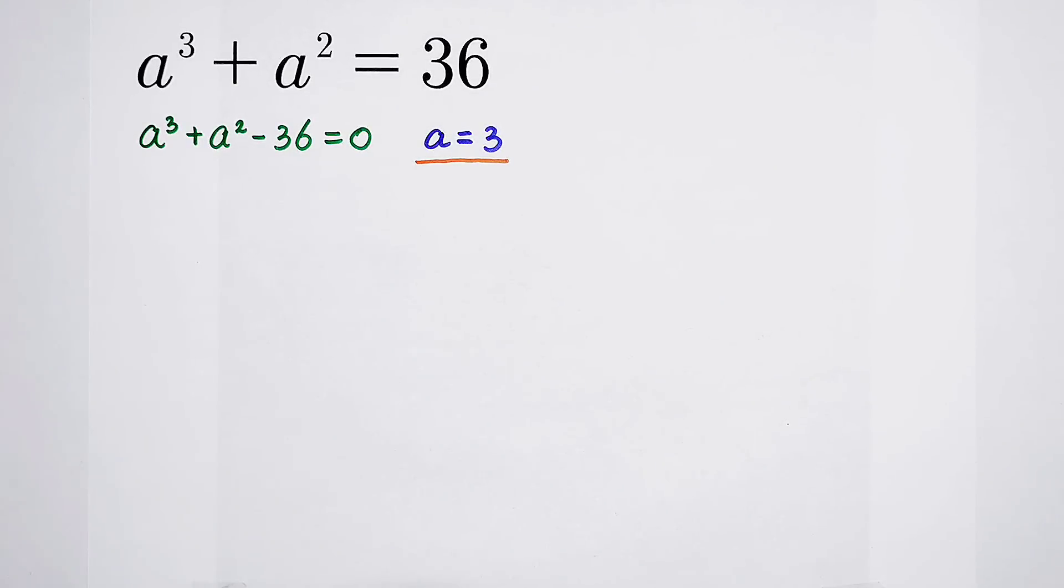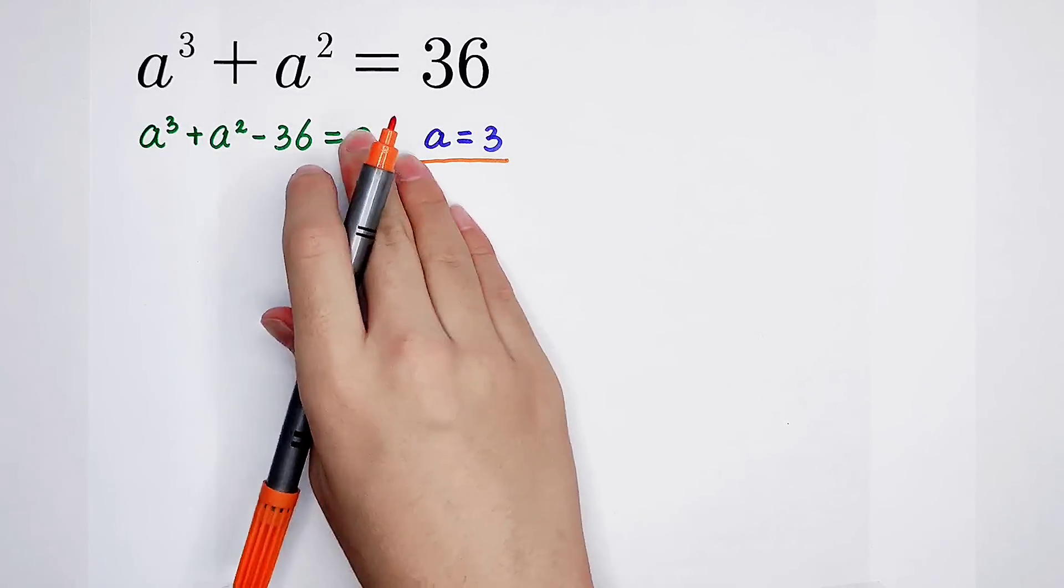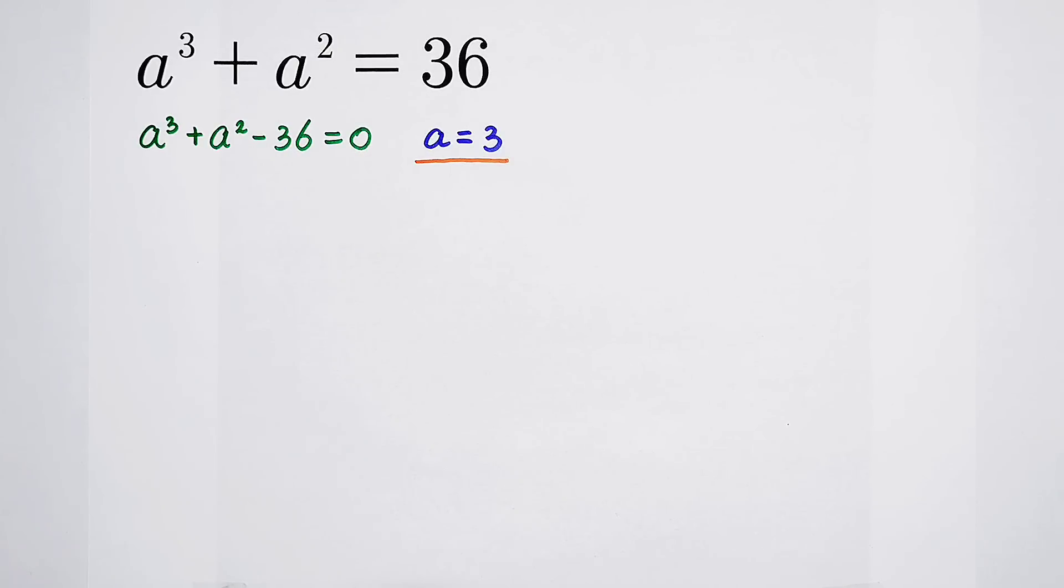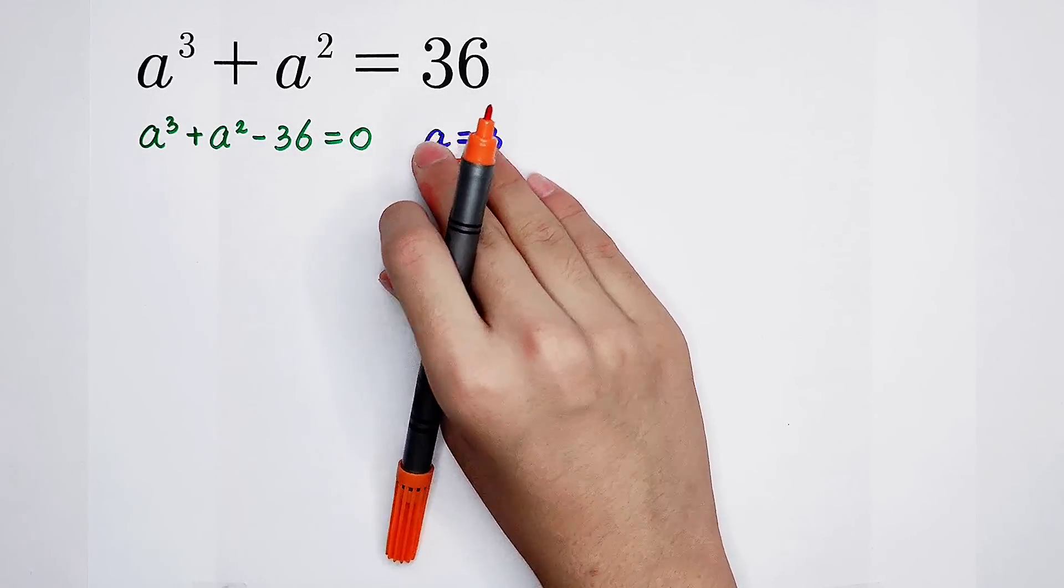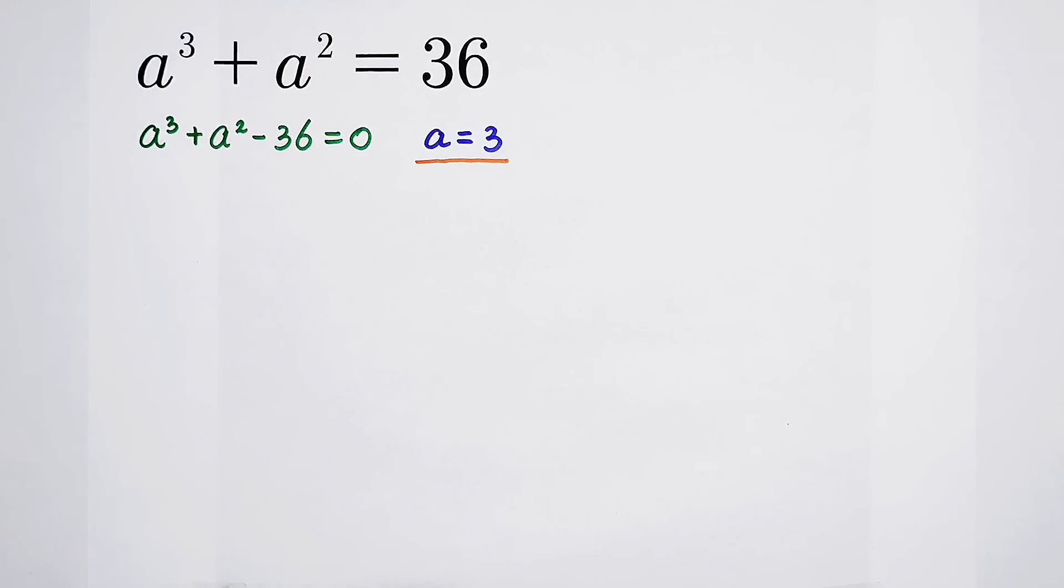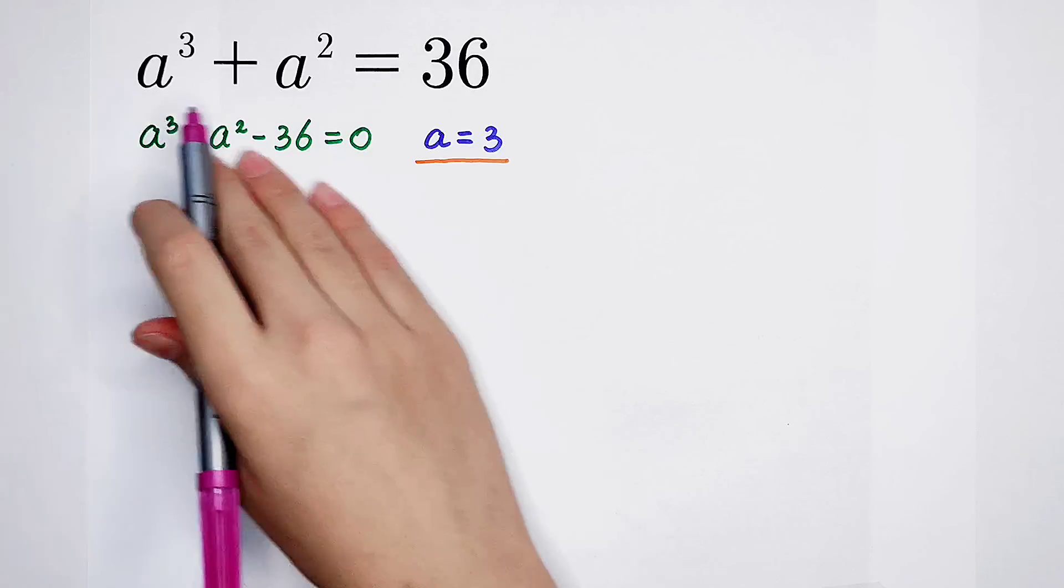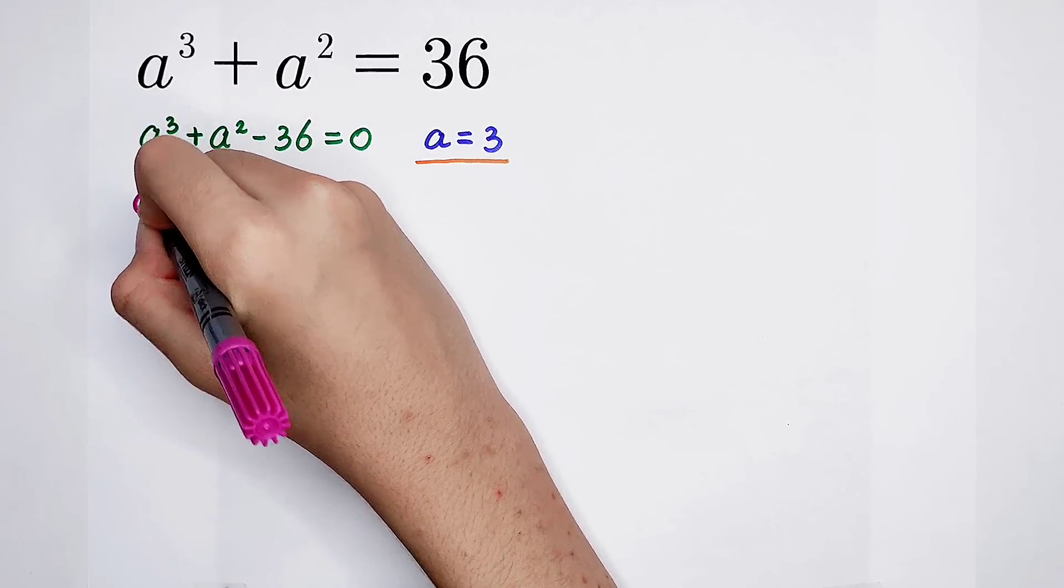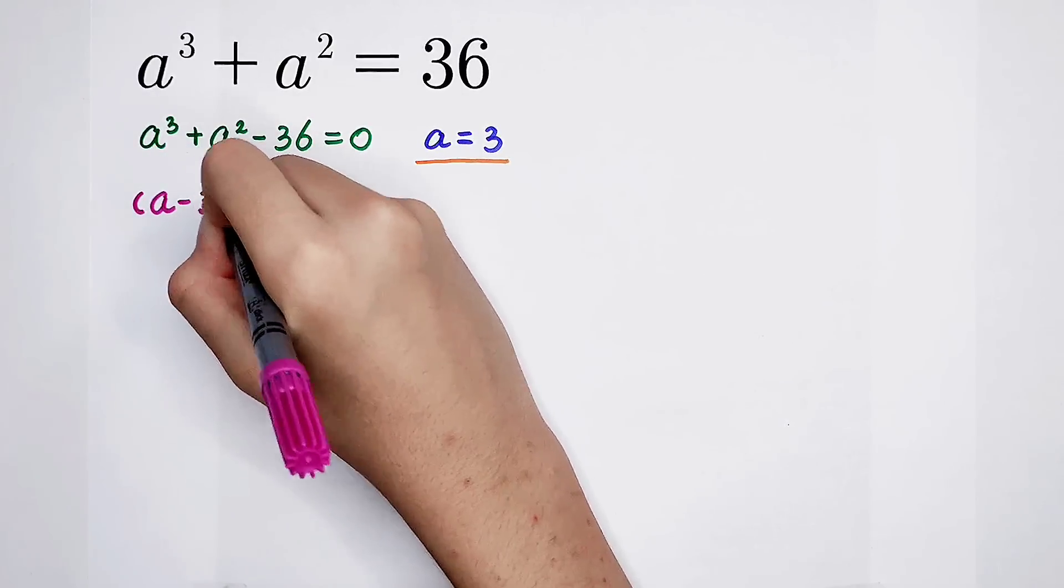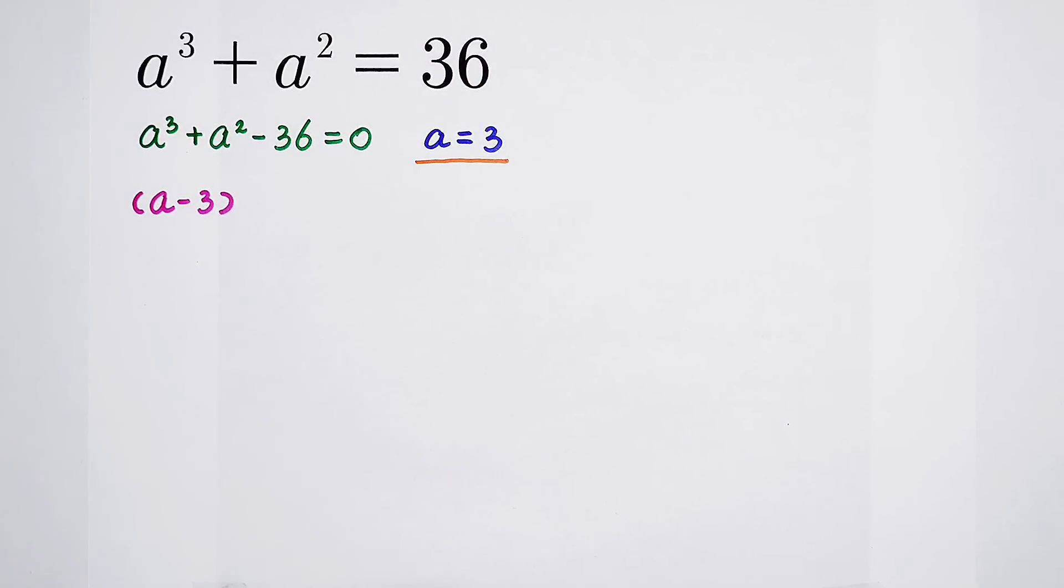So a equals 3 is a root of this equation. According to the factor theorem, if a equals 3 is one of the roots of this equation, then we can get the left-hand side has a factor a minus 3. Now our work becomes finding the other roots.